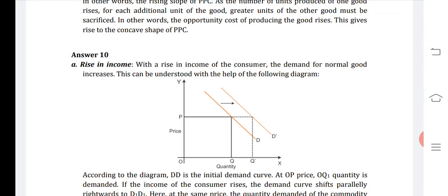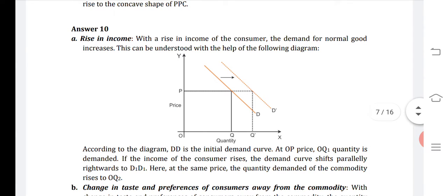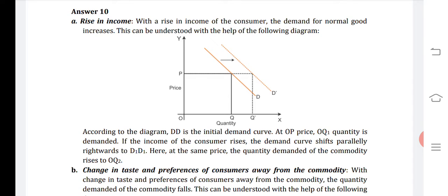First case is rise in income. With the rise in income of the consumer, the demand for a normal good increases. According to the diagram, DD is the initial demand curve. At OP price, OQ1 quantity is demanded. If income of the consumer rises, the demand curve will shift parallelly rightwards to D1D1. At the same price, the quantity demanded rises from OQ1 to OQ2.